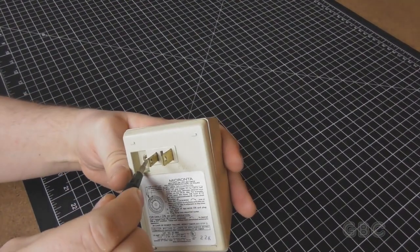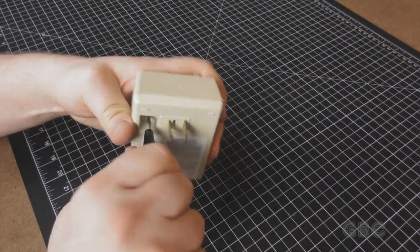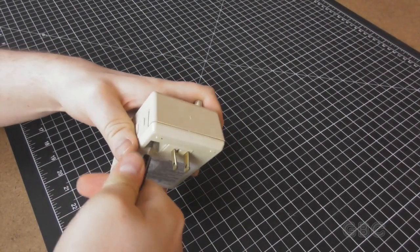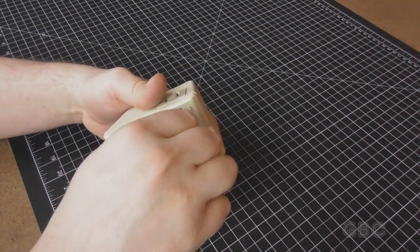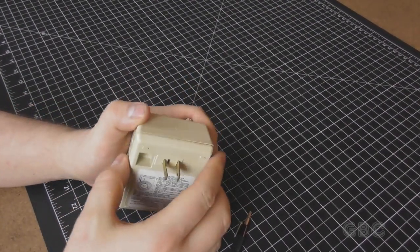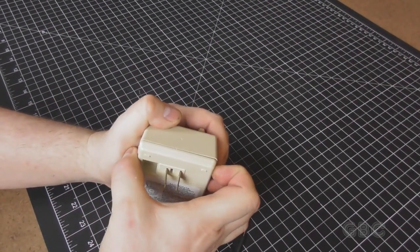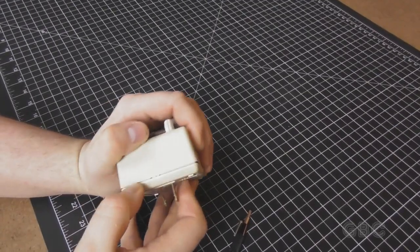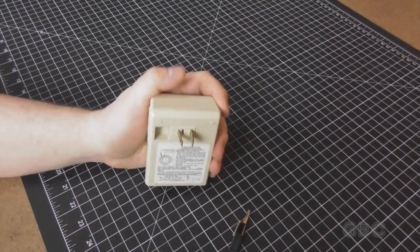On the back here there's a Torx T10 screw. I think this is the only screw on the back. I don't feel one under the label. I'm going to pause for a moment to see if there's other screws somewhere else.